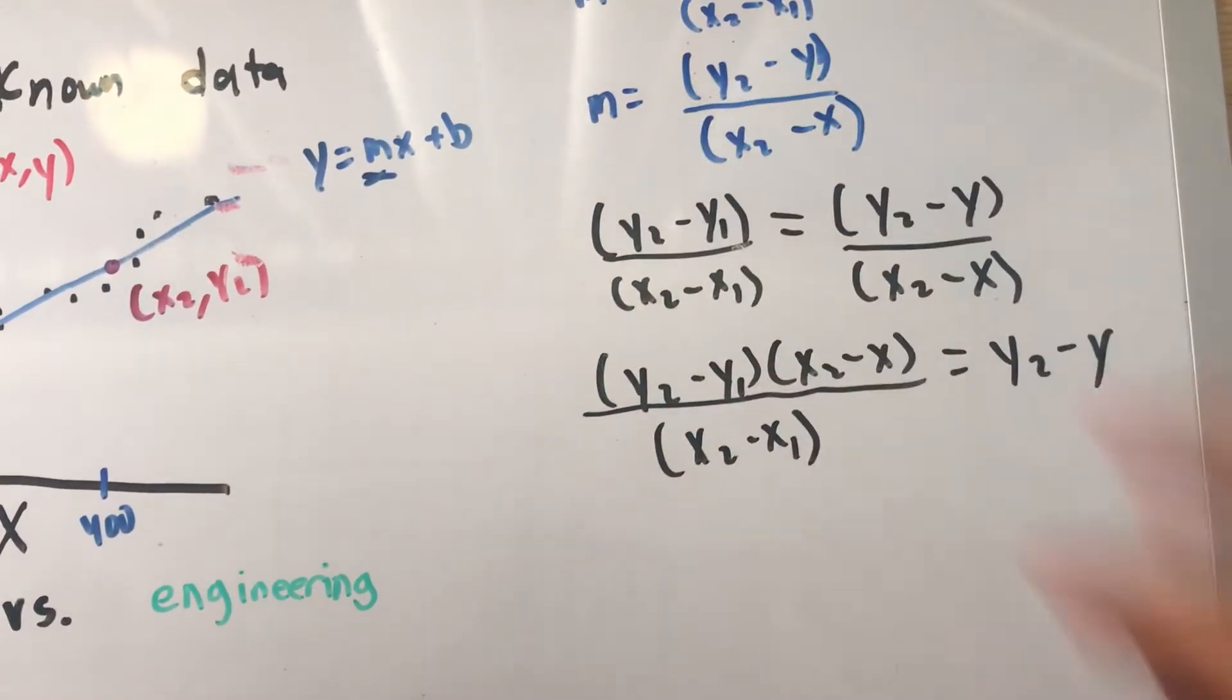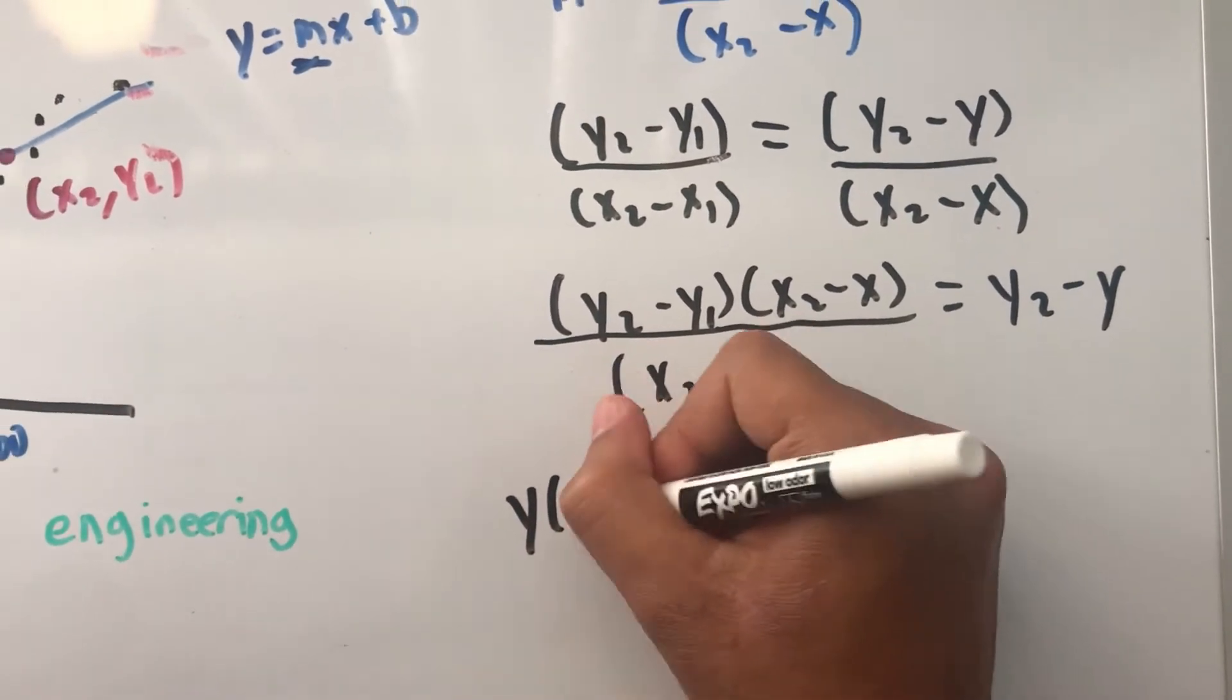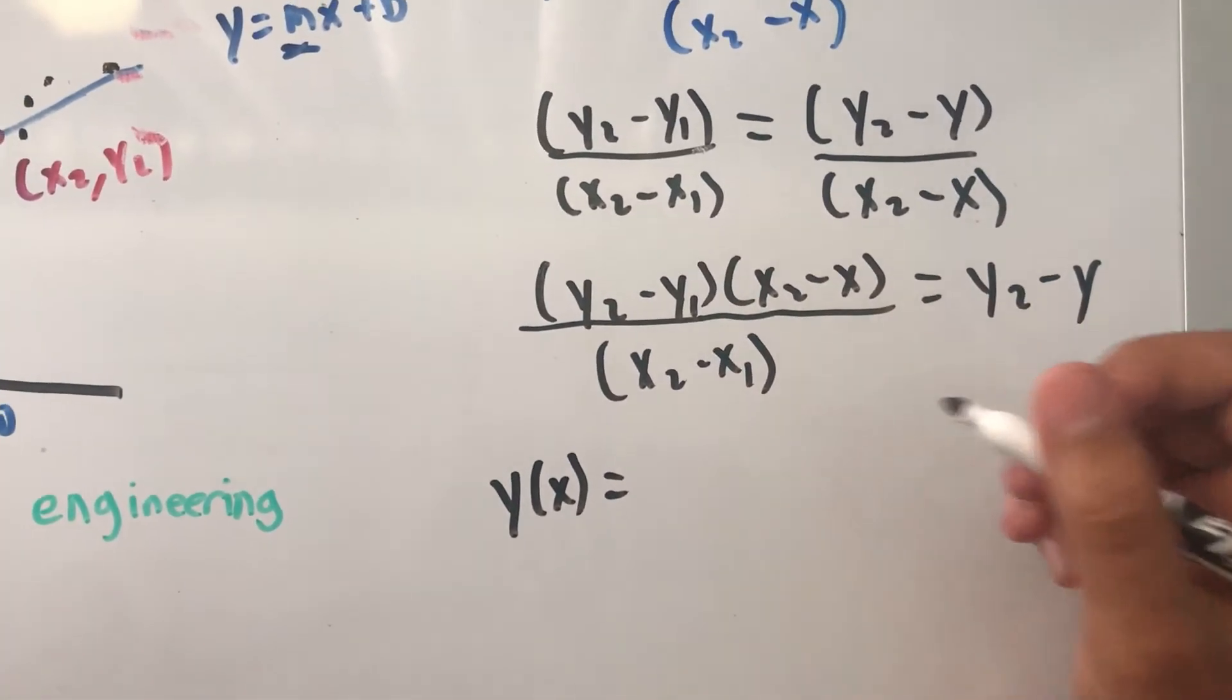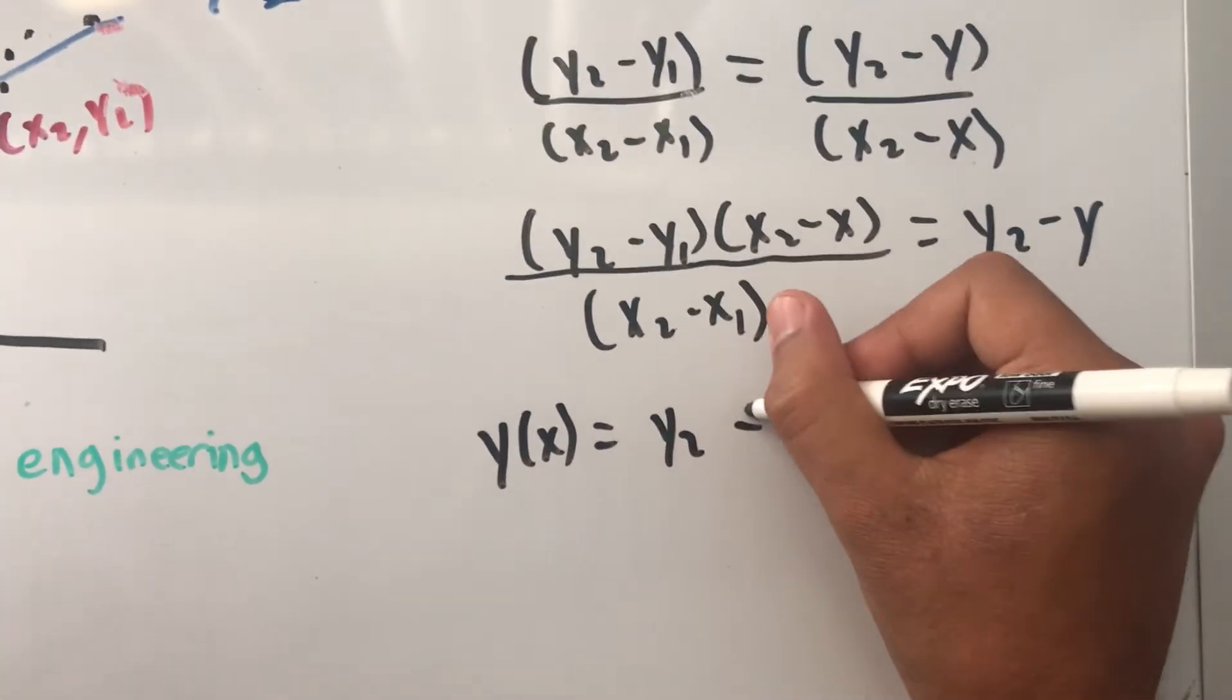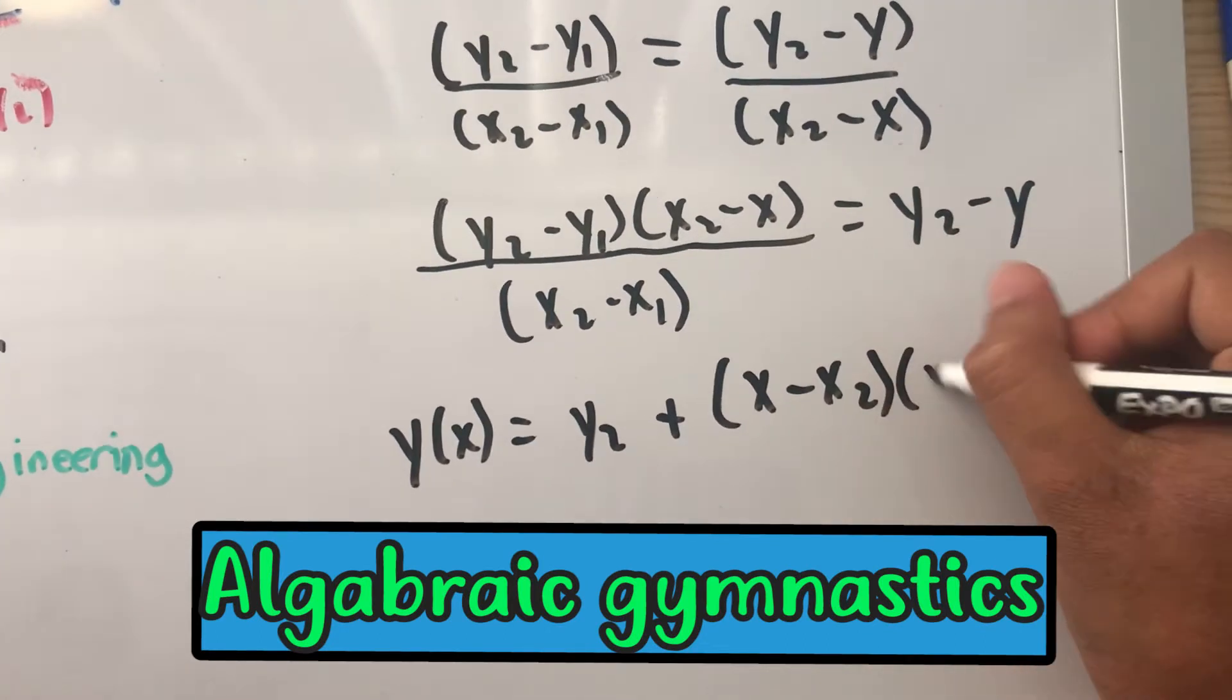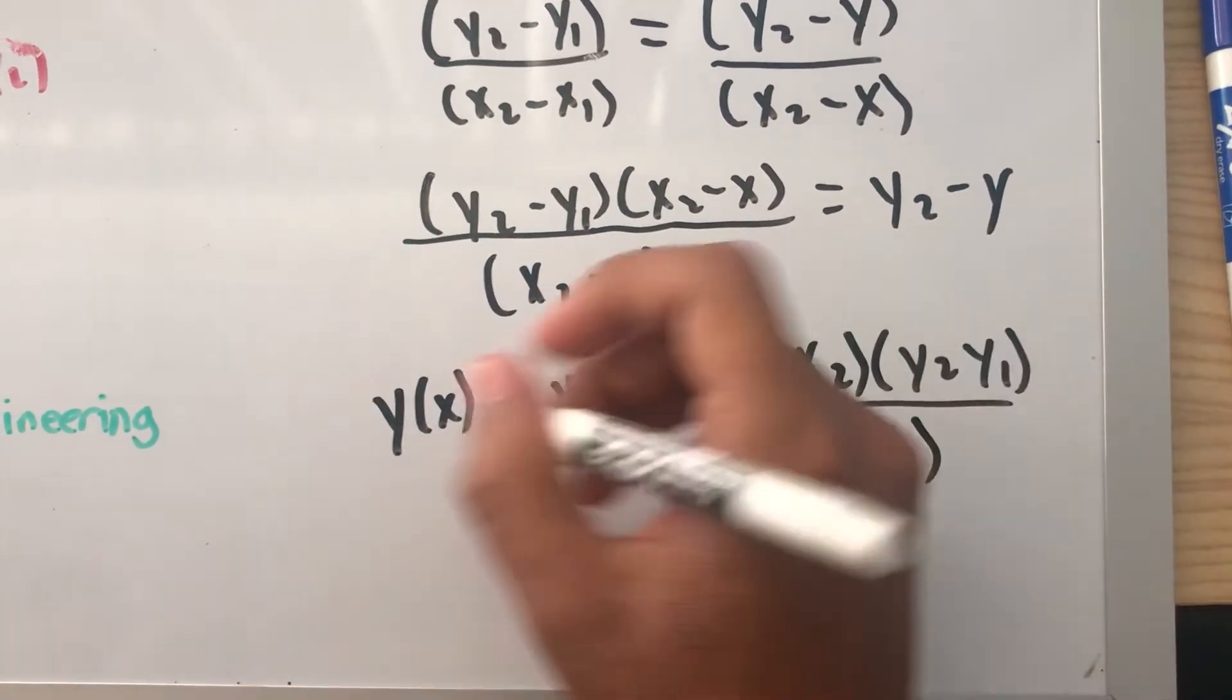If you can see, if I move this guy over and if I flip one of these signs, I'm going to get y as a function of x is equal to—I'm going to do y2 plus, I'm going to flip this side—x minus x2 times y2 minus y1 over x2 minus x1.